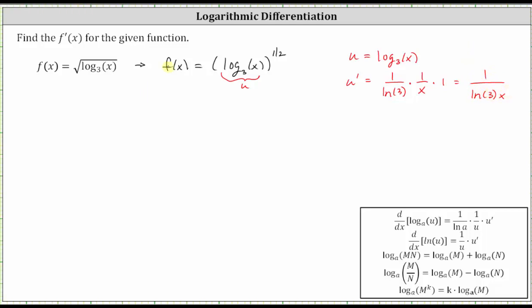So now we can just think of the original function as u to the power of one-half, and therefore the derivative equals one-half times u to the power of one-half minus one times u prime, which in our case equals one-half times